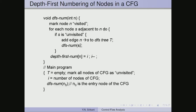The next concept we need to learn is depth-first numbering of nodes in a control flow graph. This is important because in data flow analysis we can visit nodes in any order, but visiting them in depth-first search order gives us fewer iterations compared to any other visit order. To understand the DFS order, let us understand how to do DFS numbering itself.